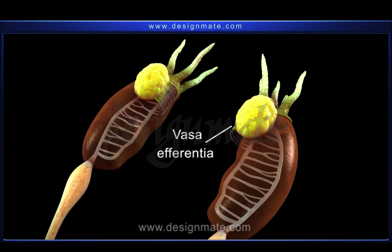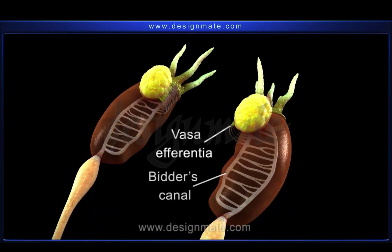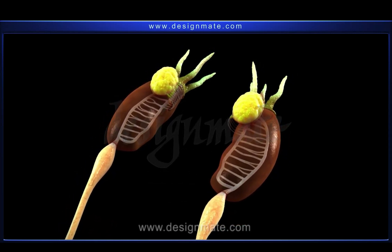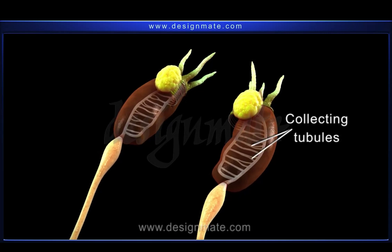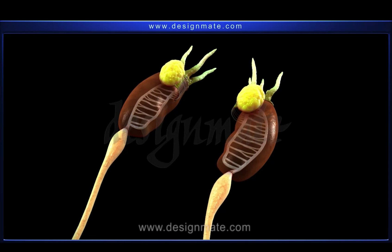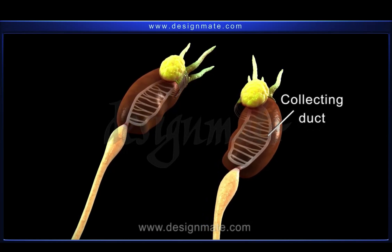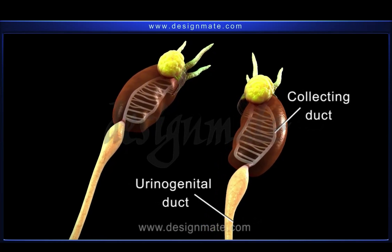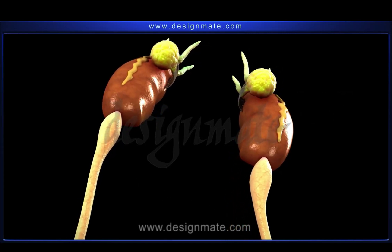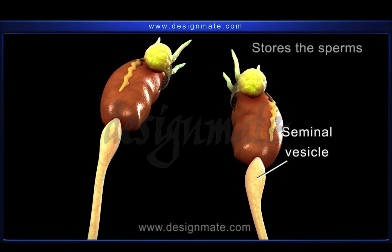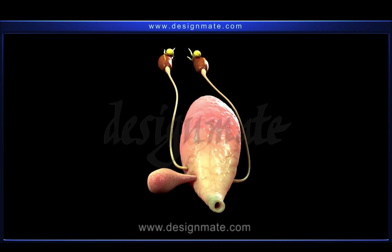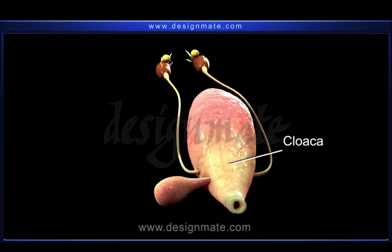The vasa efferentia that arise from the testes open into the Bidder's canal in the kidneys. The Bidder's canal then communicates with the transversely arranged collecting tubules of the kidneys. These collecting tubules join to form a longitudinal collecting duct, which opens into the respective urinogenital ducts. Each urinogenital duct swells up immediately after coming out of the kidney to form a seminal vesicle that stores the sperms.